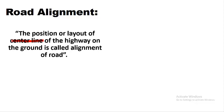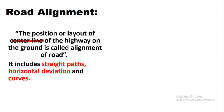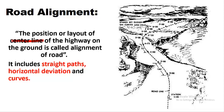Road alignment includes straight paths, horizontal deviations, and curves. As you can see, whenever a survey is conducted for a road, first of all the center line is marked, and then the cutting on the left or right side is made according to the design width of the road. This center line is what is called road alignment.